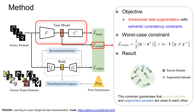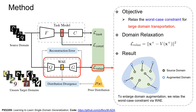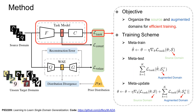The first step is considering a worst-case scenario, where we propose adversarial domain augmentation. The worst-case constraint is relaxed by a Wasserstein autoencoder for large domain transportation. Finally, we organize the source and augmented domains in a meta-learning pipeline.